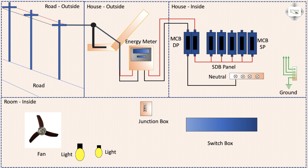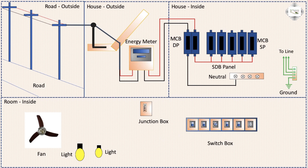GND to R phase connection or 5 ampere socket 2 pin going to power socket. Second switch or dimmer, fan switch, light switch, or 50 ampere 3 pin power socket connection.